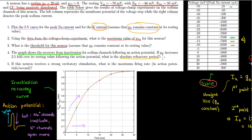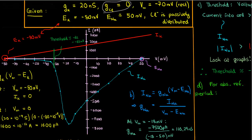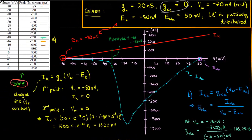The absolute refractory period is the time during which, no matter how hard you stimulate the channels, the neuron will never get past threshold — the current into the cell will never exceed the current out of the cell. For this neuron, the sodium current will never exceed the potassium current during this period. Going back to the IV curve, we need the potassium current to always be greater in magnitude than the maximum possible sodium current at that voltage. The maximum possible sodium current occurs at negative 18 millivolts.